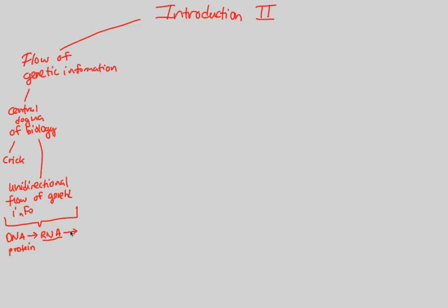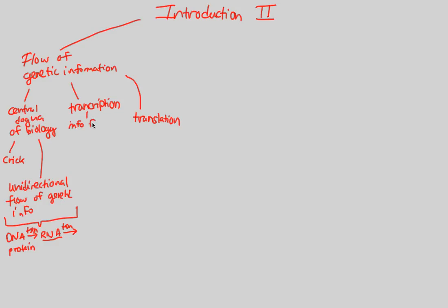Now more specifically, I want to put some names to these arrows. The flow of genetic information is first dictated by something called transcription, and then we have translation. Gene expression is all about transcription and translation. Transcription comes first — you can abbreviate it as TXN — and translation over here as TSN. These are the abbreviations I'll be using from this point forward.